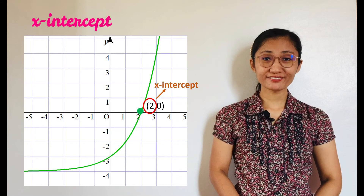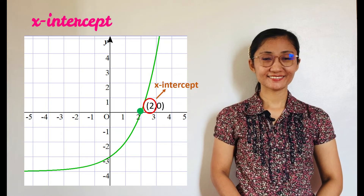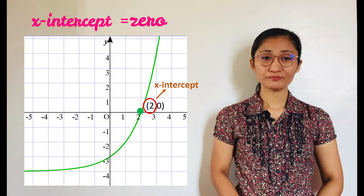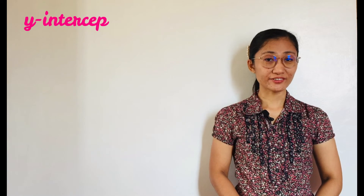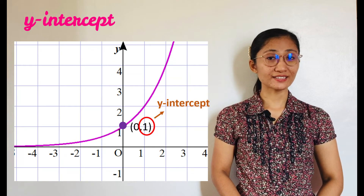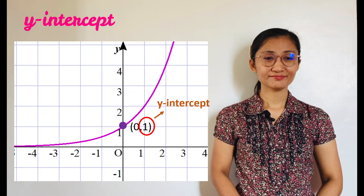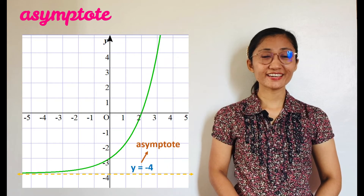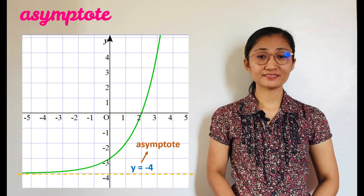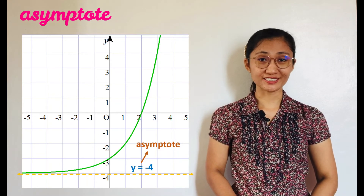Recall that an x-intercept is the value where the graph touches the x-axis, and it is also called the zero. A y-intercept, on the other hand, is the y-value where the graph touches the y-axis. Lastly, an asymptote is a line which the graph gets closer and closer to, but never meets, nor crosses, nor touches.